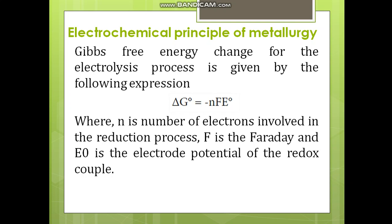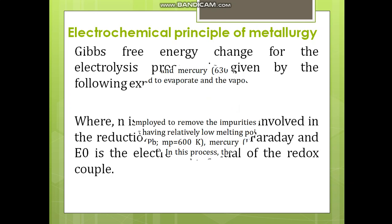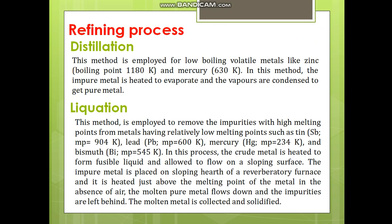The final step in obtaining 100% pure metal is the refining process, also called purification of the metal. Different methods are employed depending on the nature of the substance. The first method is distillation, which is based on the boiling points of substances. It is used for low-boiling volatile metals like zinc and mercury. The impure metal is heated to evaporate, and the vapours are condensed to obtain the pure metal.